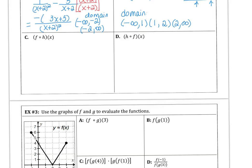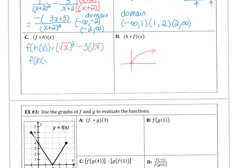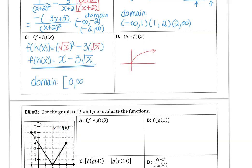For part c, f of h of x: h of x is the square root function. We substitute square root of x into f of x, which is x squared minus 3x. Squaring the square root eliminates it in the first term, giving x minus 3 times the square root of x. The domain is restricted to 0 to infinity because the square root function only works for non-negative values.